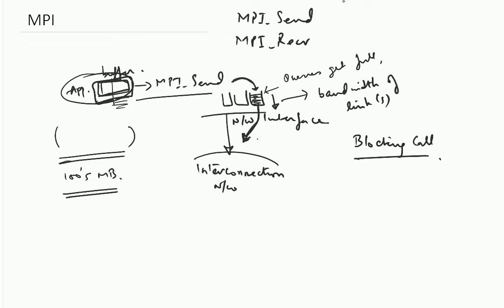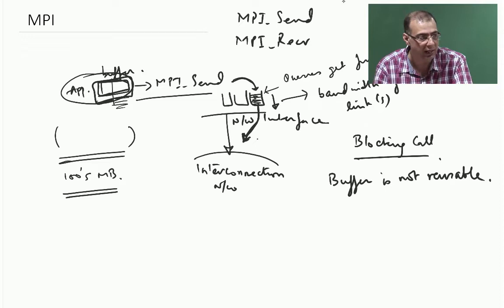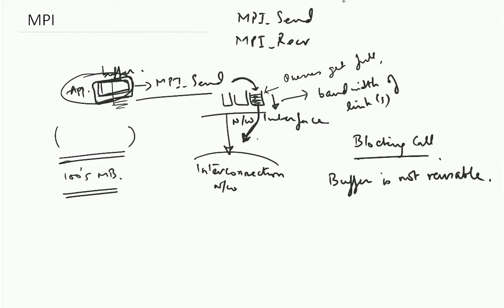So, what is the main issue? The main issue is that this buffer is not reusable. The application should not be reusing this buffer, because it has not copied the contents out and because of that it is not returning back to the user. Well, you may have other stuff to do, you may have other computations to do, other things to take care of. So, in order to do that, what is supported is non-blocking calls.